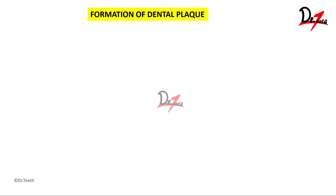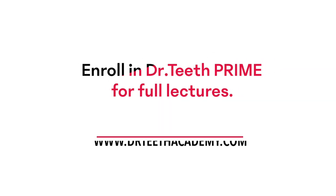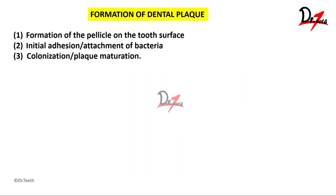Now let's talk about the steps of formation of dental plaque. There are three major steps involved. First is the formation of the pellicle on the tooth surface. The second step is the initial adhesion and attachment of bacteria to the pellicle. And the third step is colonization and plaque maturation.